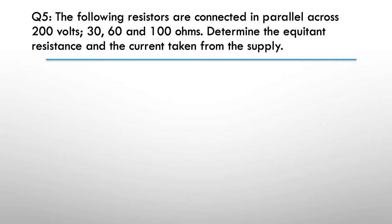Question five. The following resistors are connected in parallel across a 200 volts supply. Got a 30 ohm, a 60 ohm, and a 100 ohms. Determine the equivalent resistance and the current taken from the supply. So pause here.